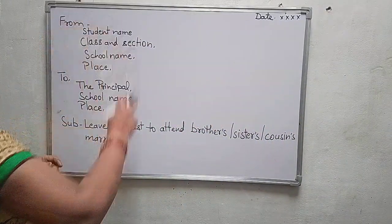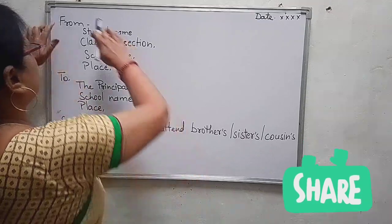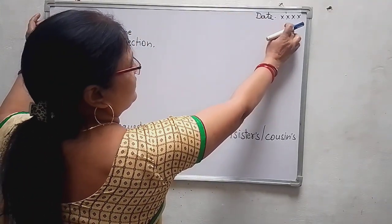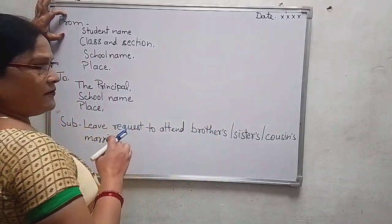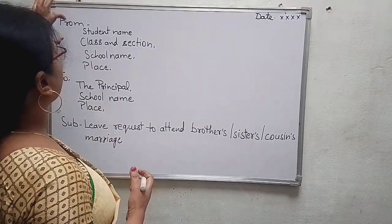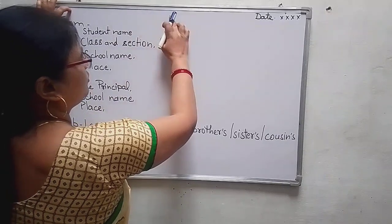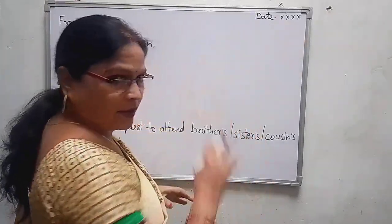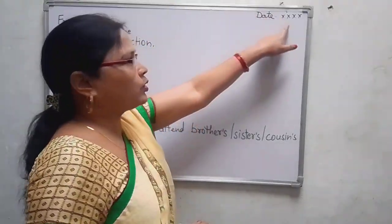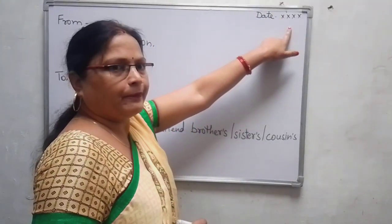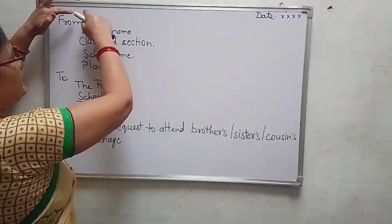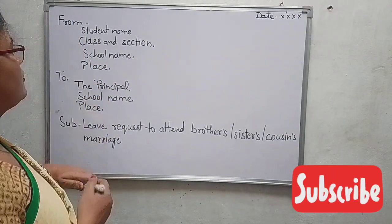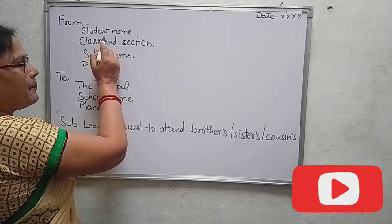So first, what is the first line? On the margin, the first line is to add the date — the date on which you have written the leave letter. Then from the next line, we will add FROM, followed by the student's name. So you can write your name here.